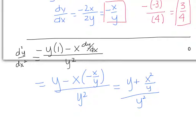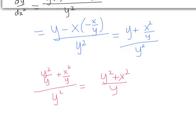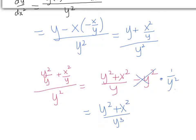We need to simplify this complex fraction by getting a common denominator in the numerator. That gives us y squared over y plus x squared over y, all divided by y squared. Adding straight across in the numerator: y squared plus x squared over y, divided by y squared. Dividing by y squared is the same as multiplying by 1 over y squared, so multiplying across gives us y squared plus x squared over y cubed. This is your second derivative.